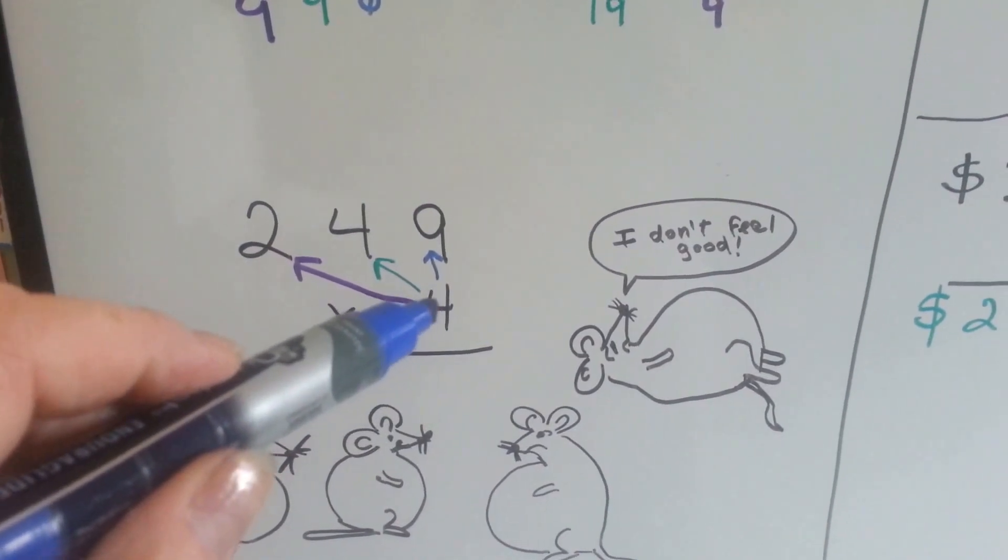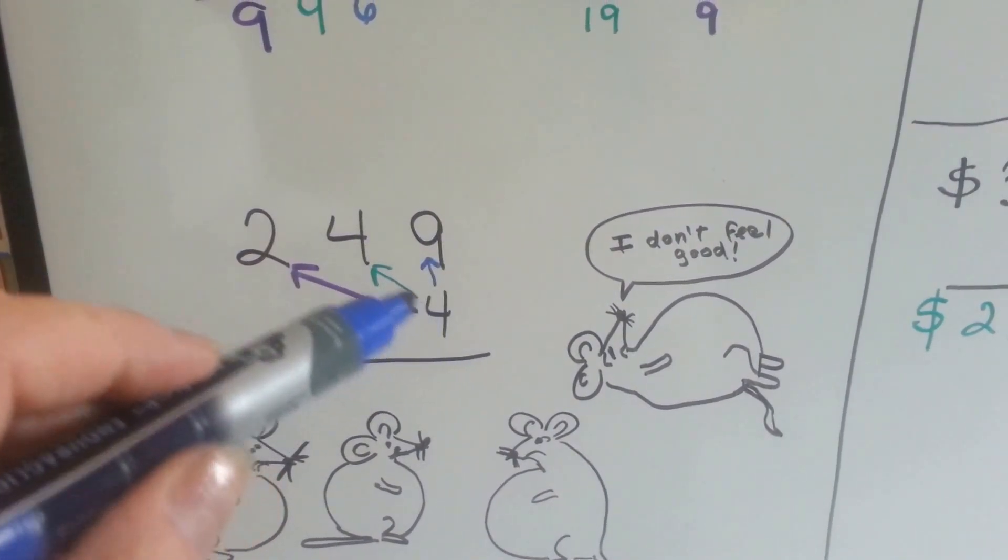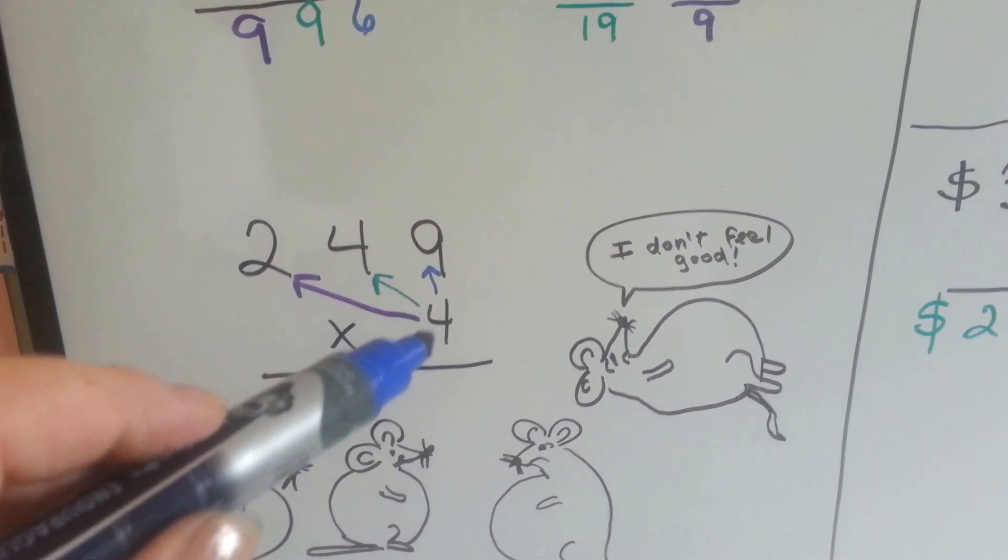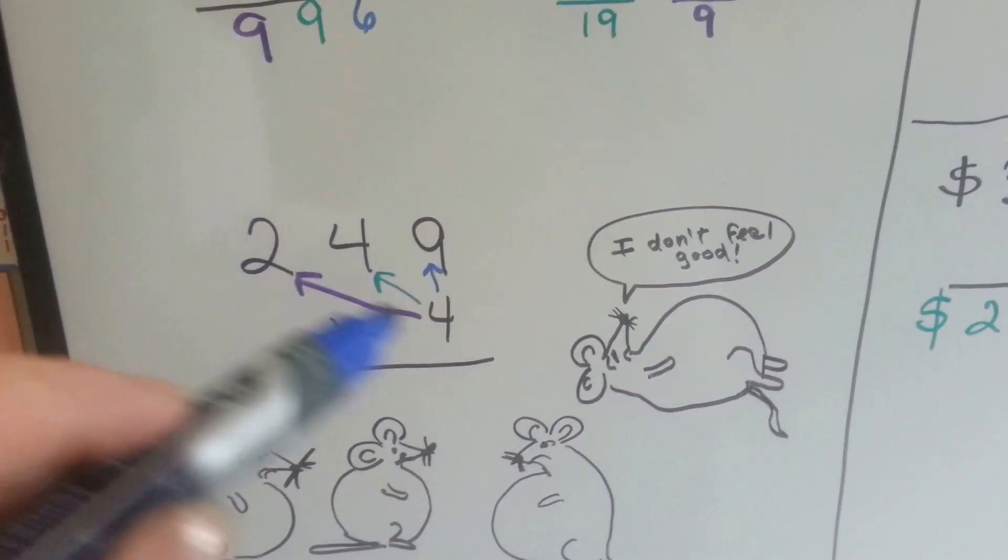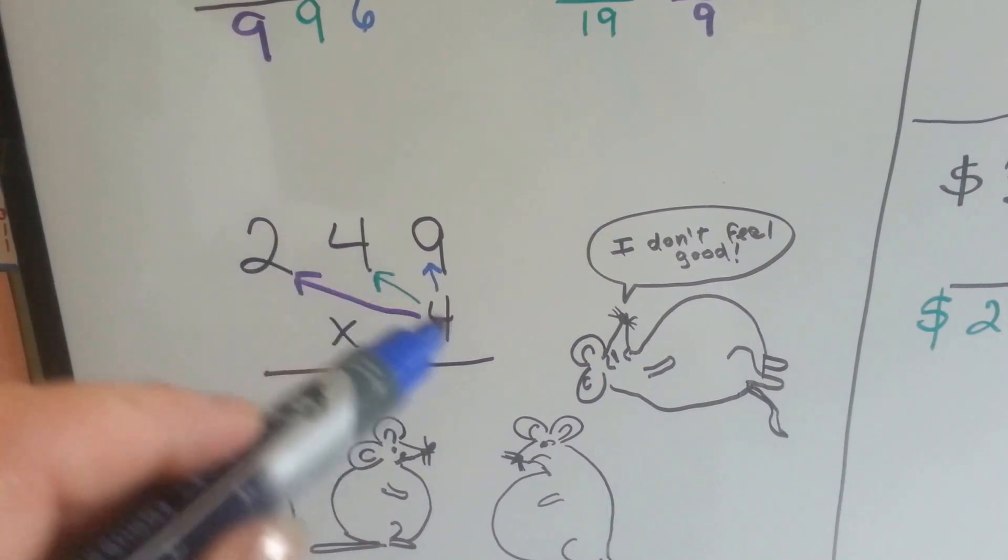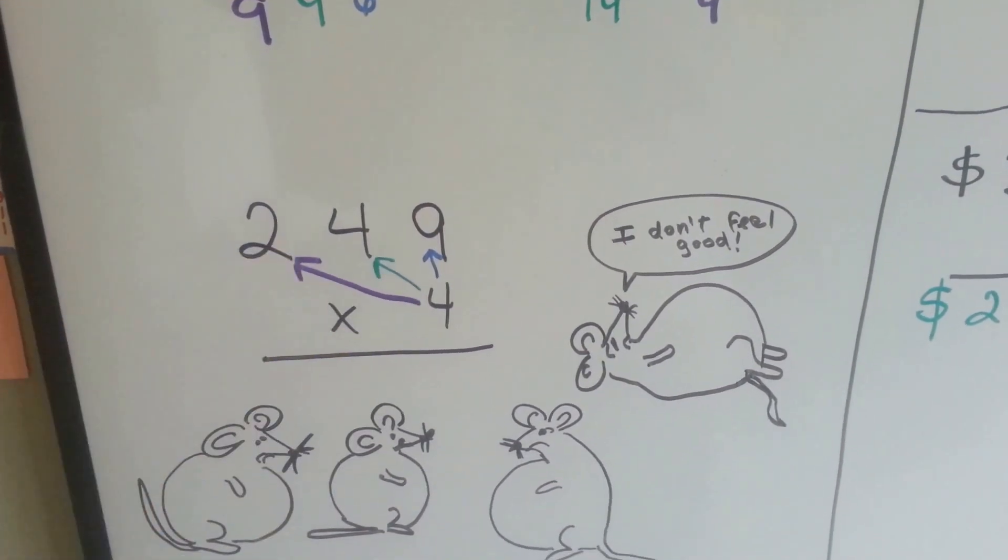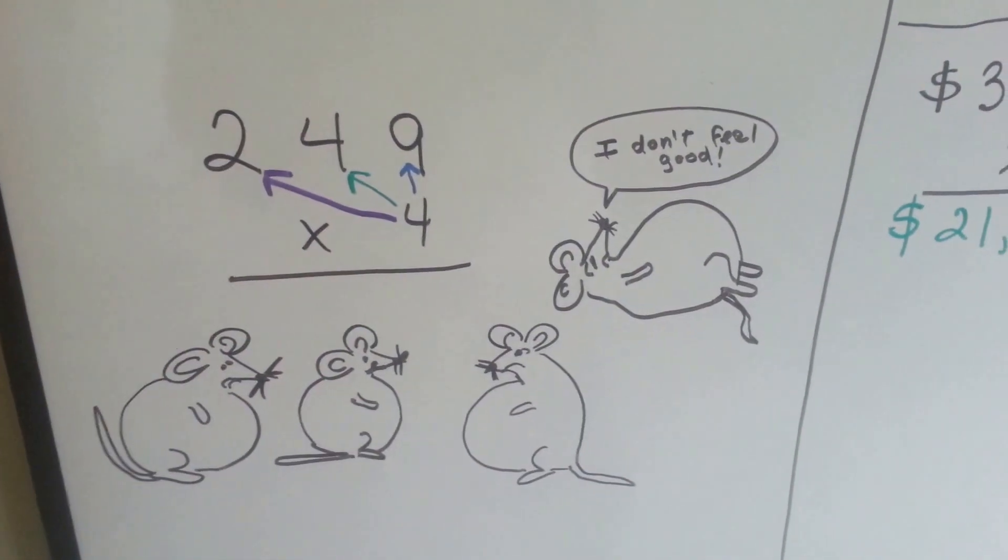So 2 times 4 is 8 plus 1 is 9 and we get 996. What we're going to do is take turns going first to the 1's, then to the tens, then to the hundreds. And any number that we have to regroup over, we remember to add them to the number after we multiply it. Poor miceys, poor little mice.